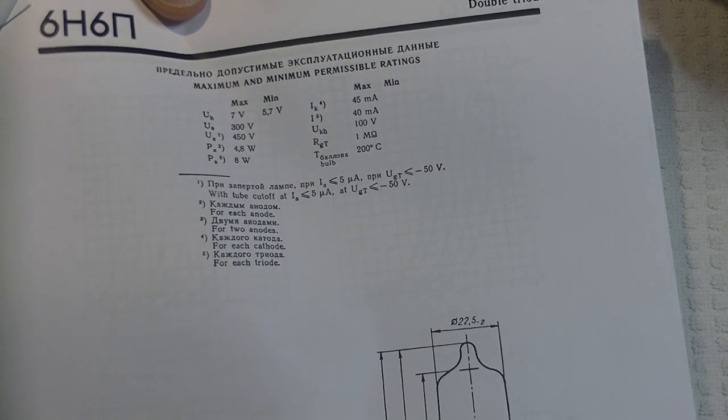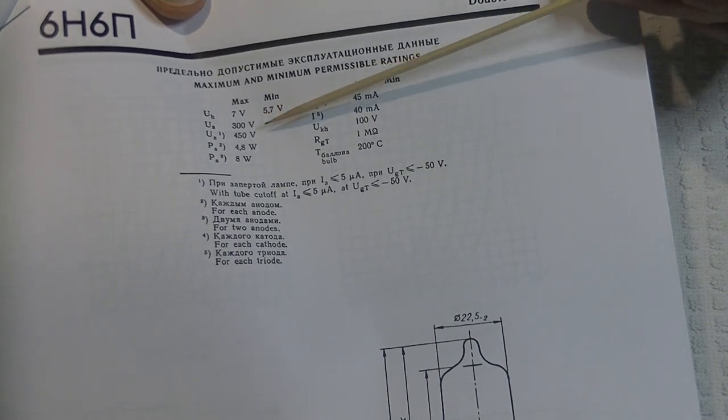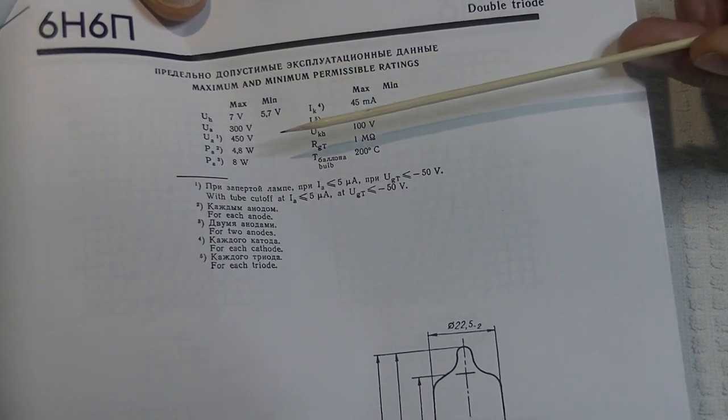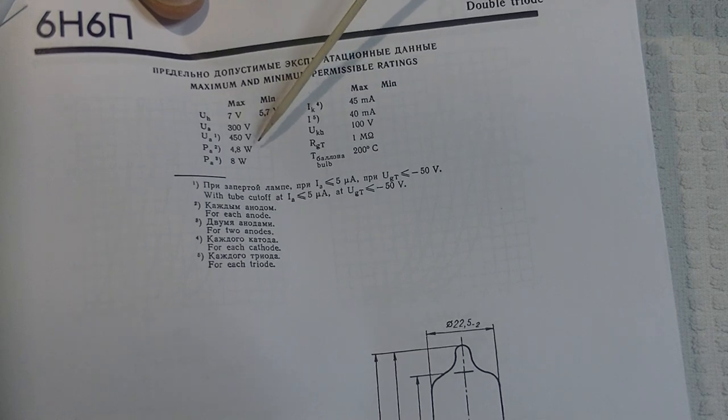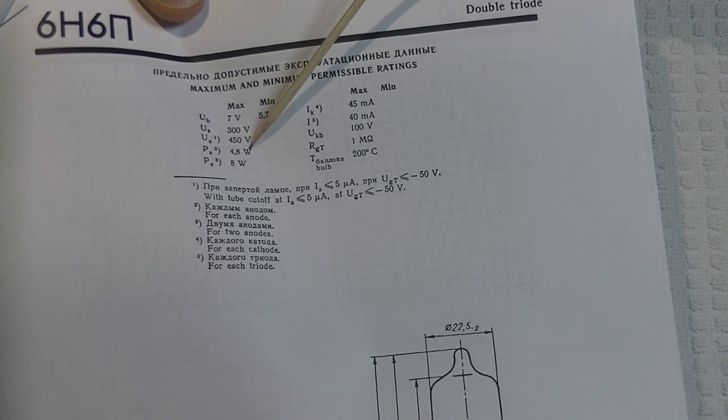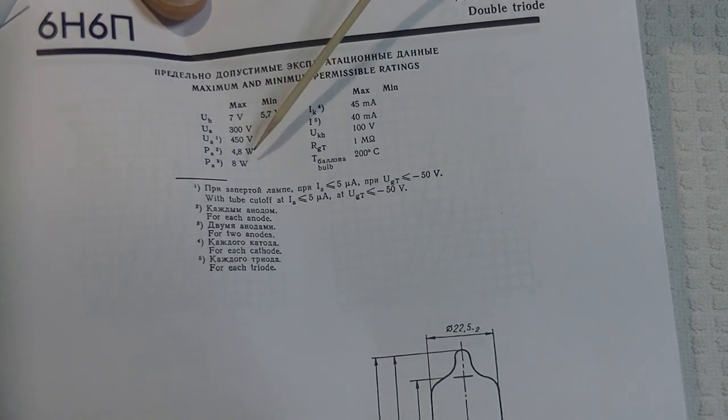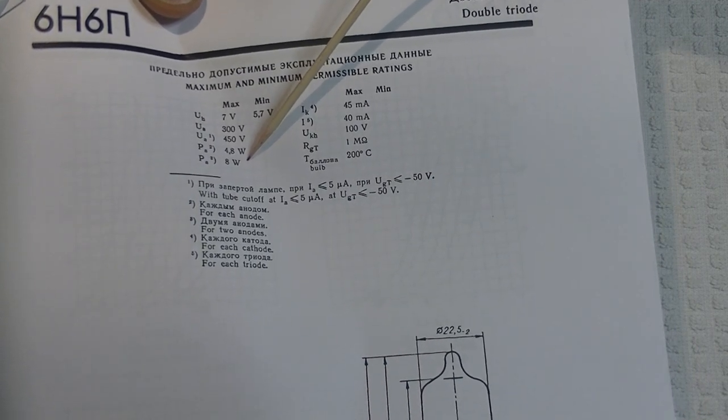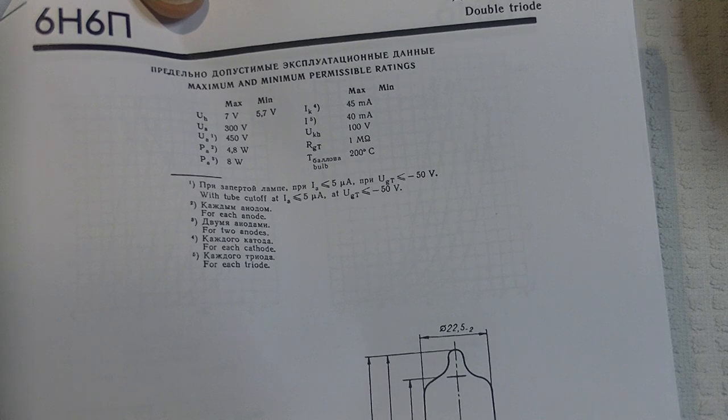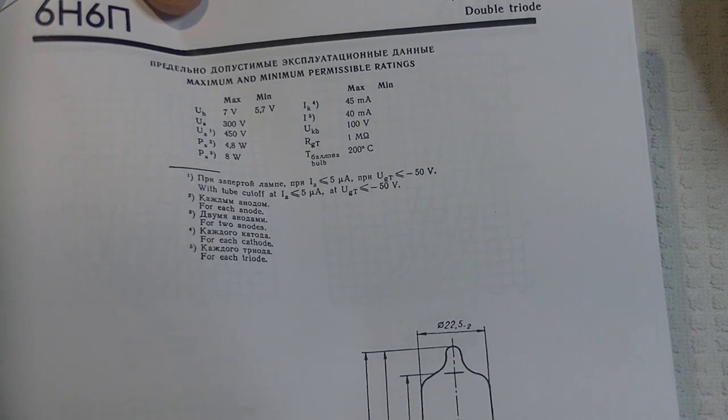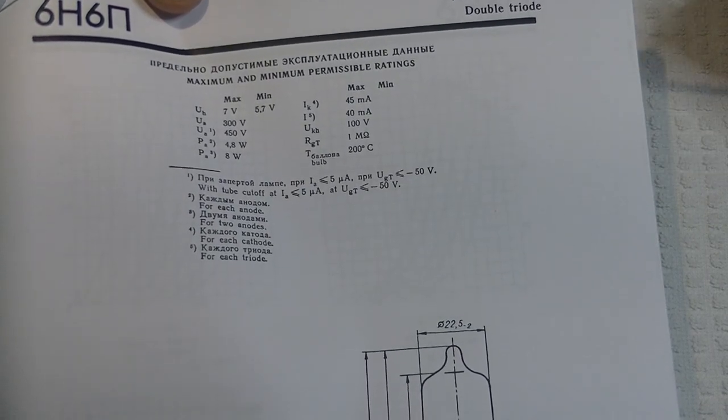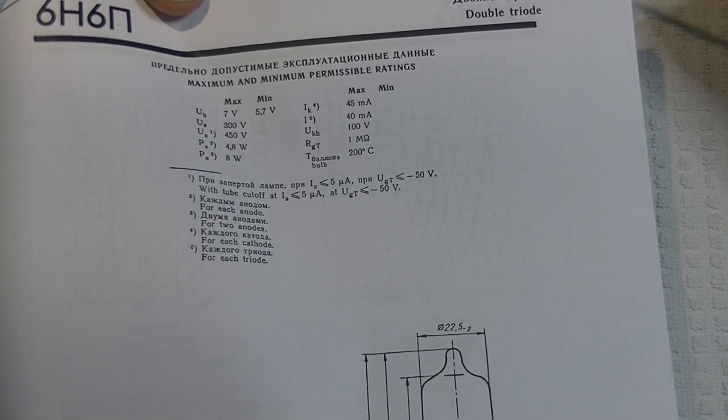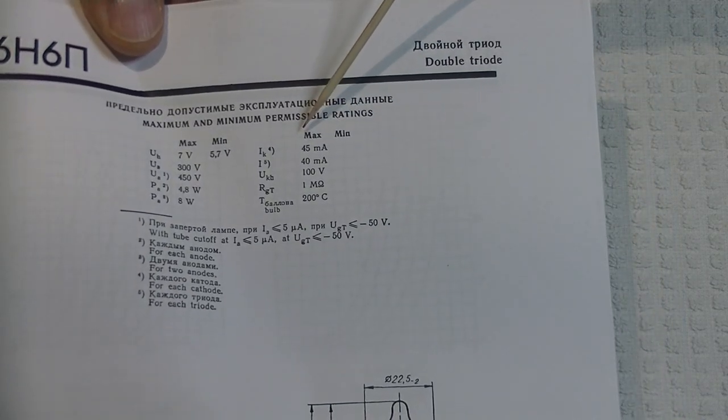Plate maximum is 300 volts. The dissipation is 4.8 watts per side, combined maximum is 8 watts. That's actually quite a bit. You could run this as a very small power tube.